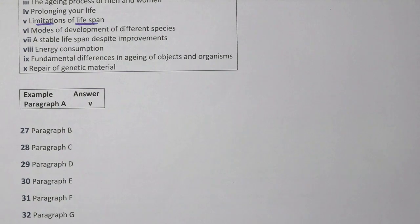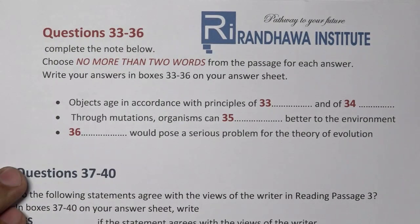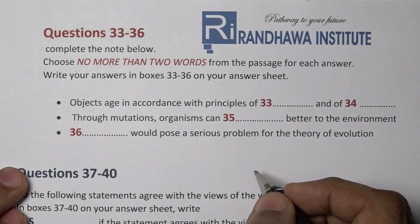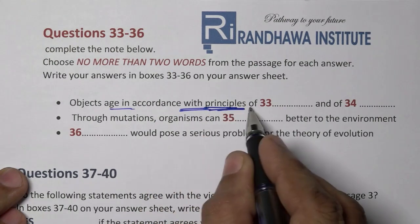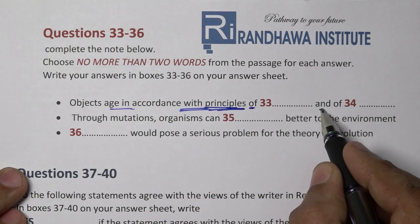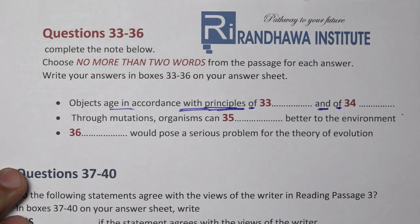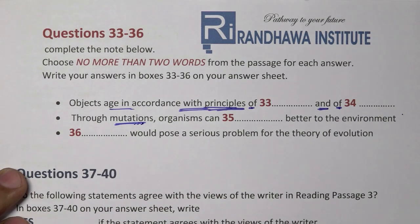Question numbers 33 to 36. Question 33: objects age in accordance with the principles of dash and of dash. Objects age in accordance with the principles of — what is the word? Through mutation? No — mutation means change. Let's find the correct word from the passage.